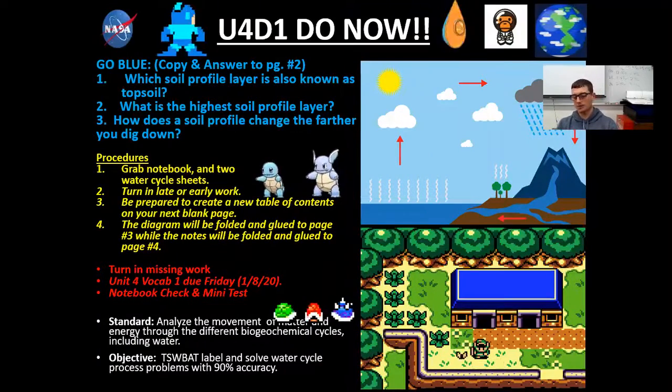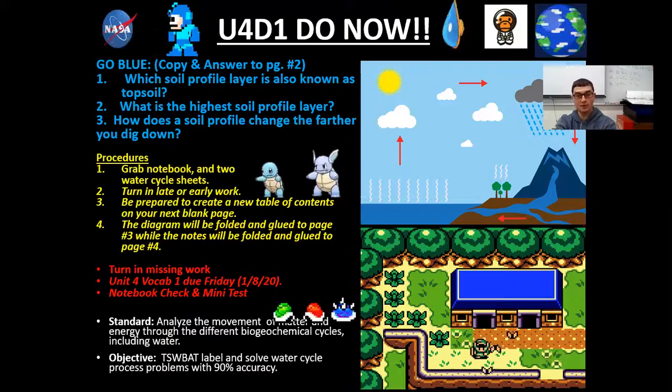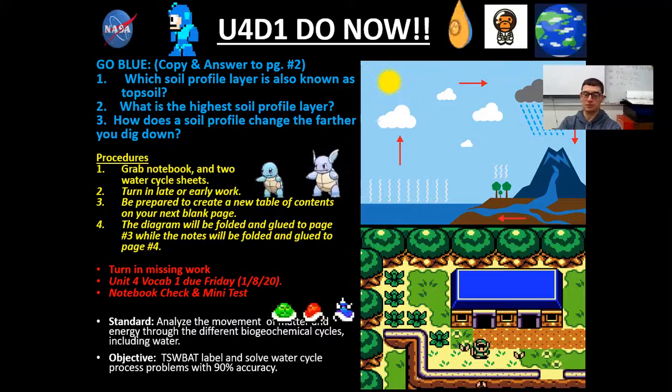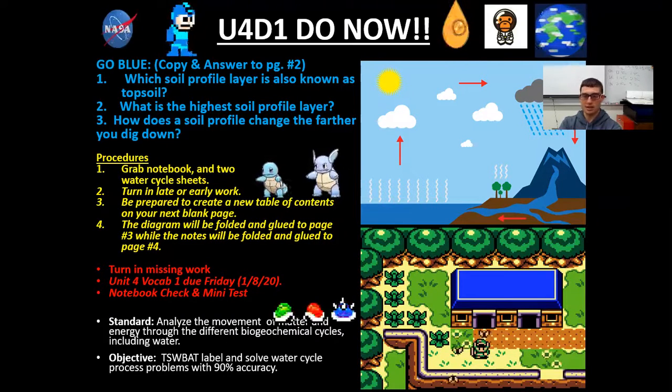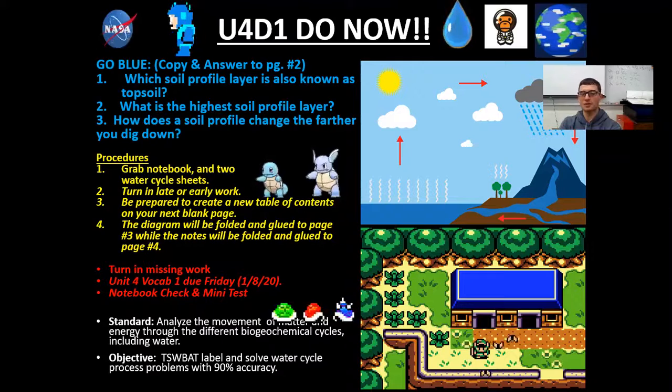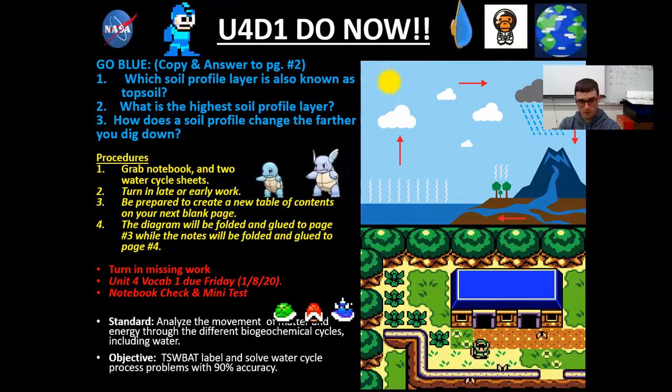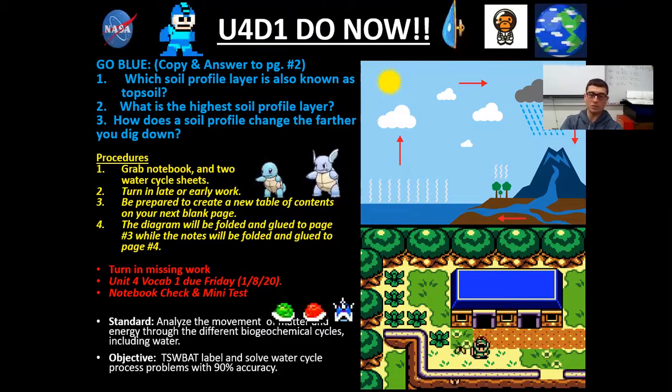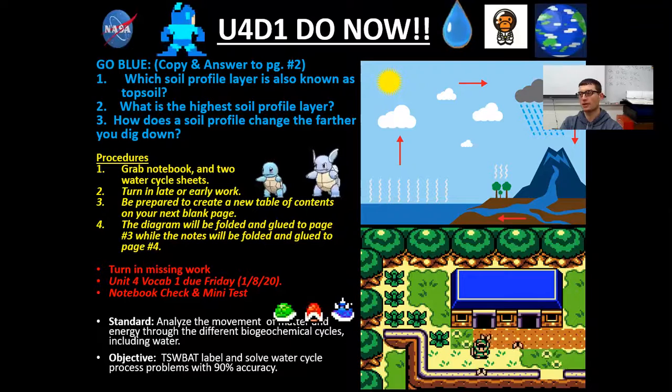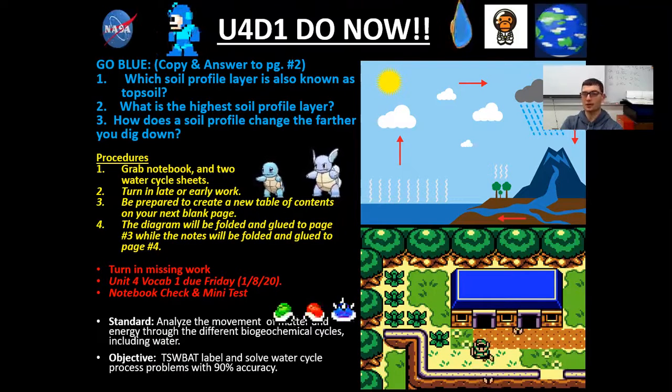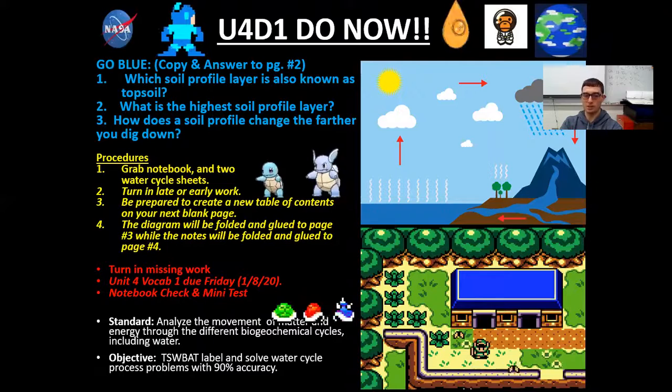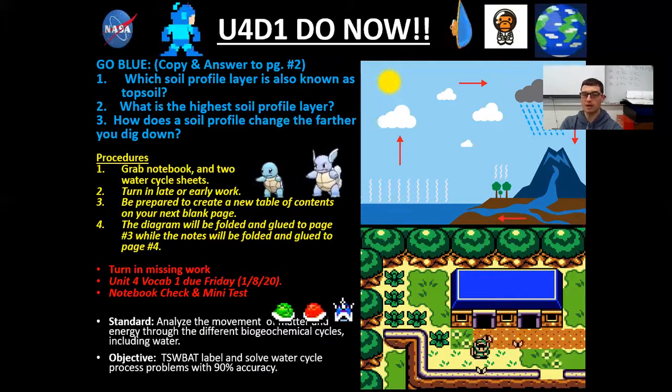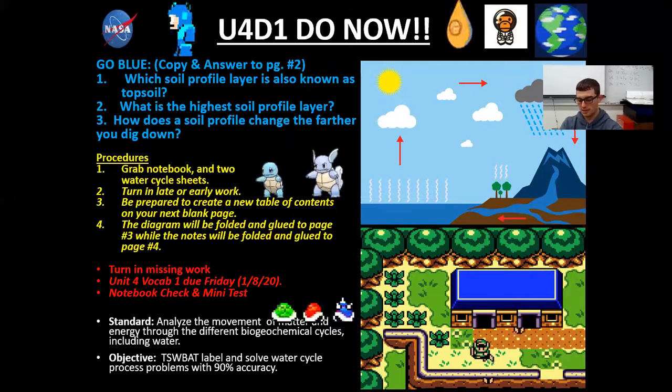As for announcements, we've got the Unit 4 vocab, which should be posted. It's going to be due after the winter break. But if you get it done early, I could probably give you some bonus points to our grades as well. That is listed on Canvas. Any other missing work, you must complete to get partial credit. And don't forget, we will have a notebook check this Friday, which should be tomorrow, and we will have another unit quiz and another notebook check after winter break in January. We've got to finish this semester strong. We've got to get our makeup work completed. We've got to put our best foot forward, as always.